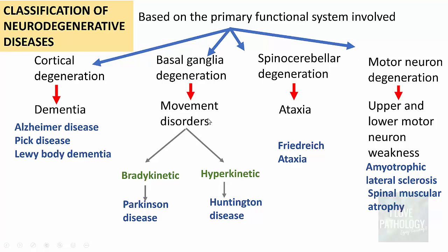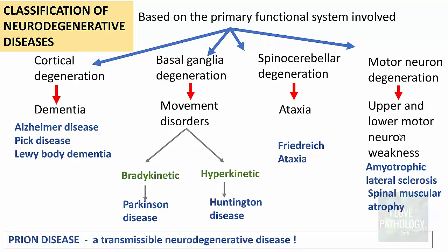So this is how we classify neurodegenerative diseases — based on the primary functional system and the symptomatology: dementia for cortical degeneration, movement disorders for basal ganglia, ataxia for spinocerebellar degeneration, and upper and lower motor neuron weakness for motor neuron degeneration. Apart from these, there is one important transmissible neurodegenerative disease known as prion disease, which we will now discuss.